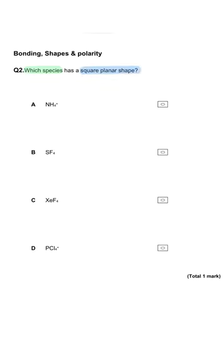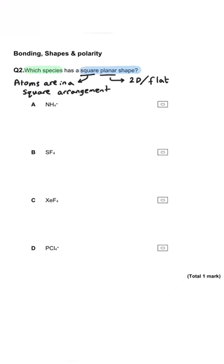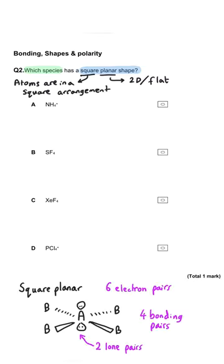Which species has a square planar shape from the options shown? In order for a molecule to have a square planar shape we need six pairs of electrons around the central atom. Two of these electron pairs will be lone pairs in the axial position above and below the central atom, and the other four pairs will be the bonding pairs in the square planar arrangement. So we're looking for six pairs total — two lone pairs and four bonding pairs.